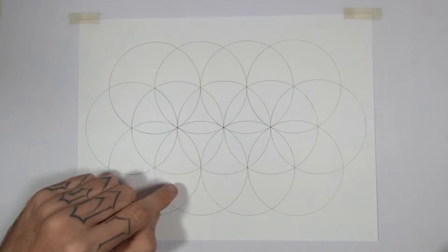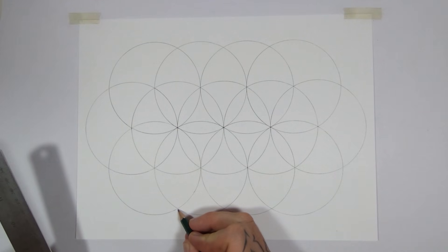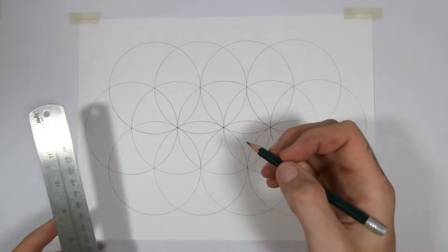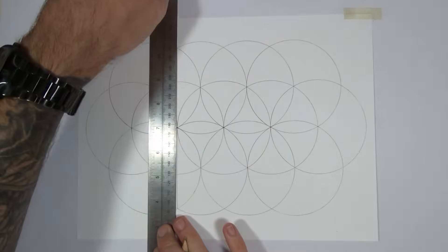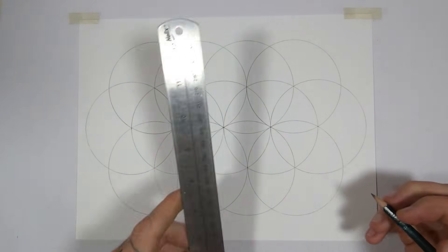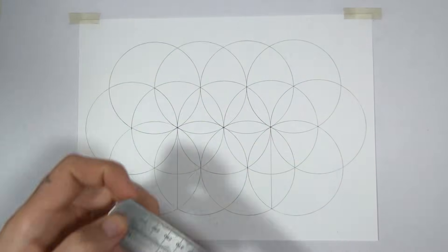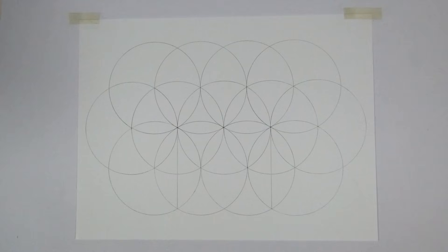And then now I need to find the center point of this section here. So I'll do that by joining this intersection to this intersection. Draw a straight line with the ruler and I'll do the same thing on the right. And that tells us where the center of that section is. So that'll be our next starting point.